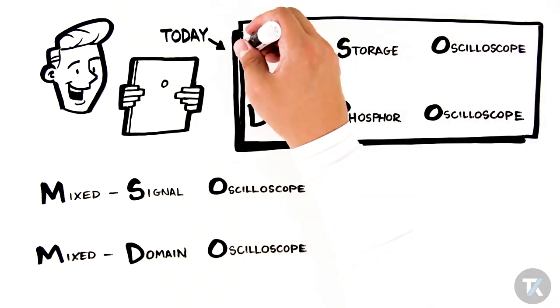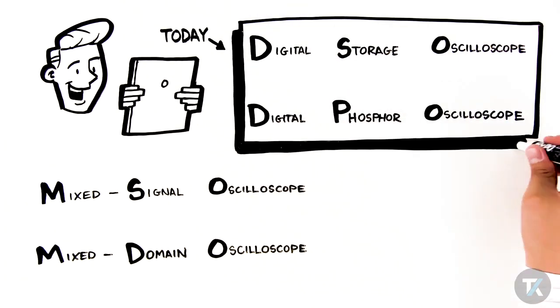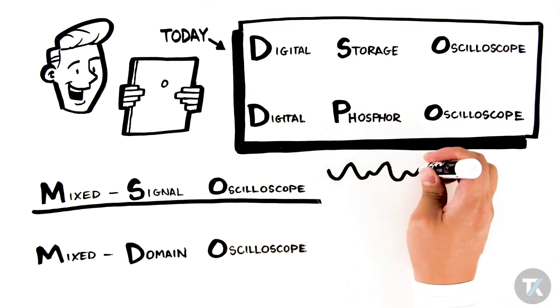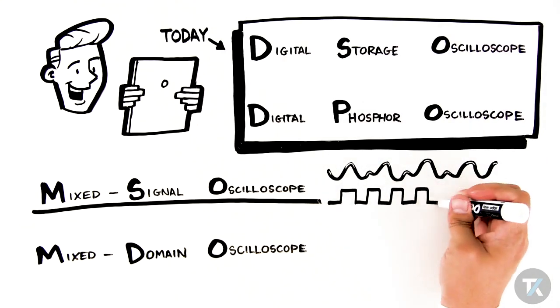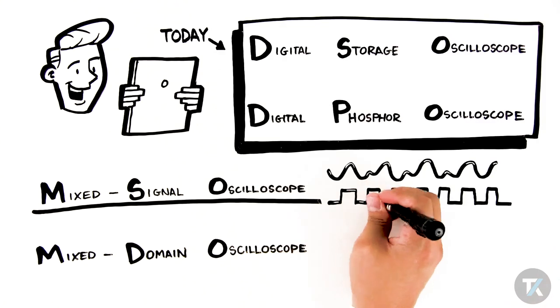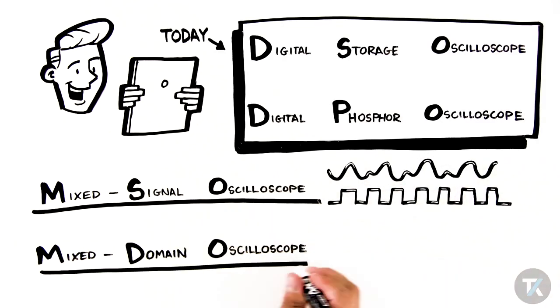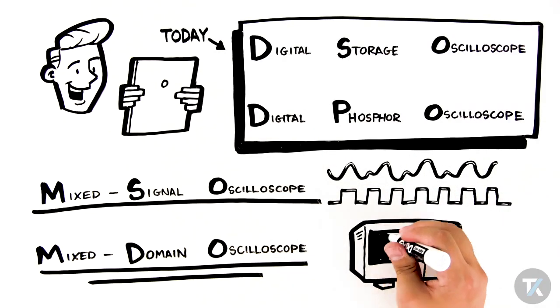Mixed signal oscilloscopes, or MSOs, are a type of DSO designed to display and compare both analog signals and digital signals, and support input channels for both types. Mixed domain oscilloscopes, or MDOs, from Tektronix are available with real built-in spectrum analyzers, something unique to us.